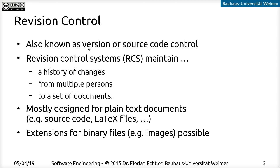Revision control is usually also called version control or source code control. The defining feature of all these revision control systems is that they maintain or manage a history of changes to a set of documents from one or more persons. The fundamental design idea behind most revision control systems is that they manage plain text documents — this can be source code, a LaTeX file, or just a plain text file with notes. Some systems also have extensions for binary files like Word documents or images, but this is not such a common use case. The focus of most revision control systems is on managing source code.